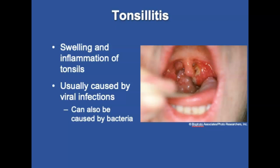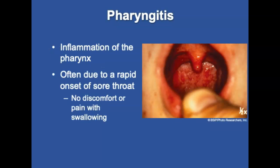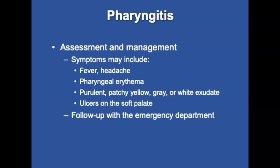Tonsillitis is swelling and inflammation of the tonsils, usually caused by a viral infection but can also be bacterial. Symptoms include swollen, red tonsils with white or yellow coating or patches, fever, sore throat, pain when swallowing, enlarged or tender lymph nodes, bad breath, headache, stiff neck, and drooling. Pharyngitis is inflammation of the pharynx, often due to rapid onset of a sore throat. Symptoms include fever, headache, patchy yellow, gray, or white areas, nasal congestion, hoarseness, cough, or ulcers on the soft palate. Treatment involves follow-up to the emergency department. A major pre-hospital concern is assessment for partial airway obstruction.